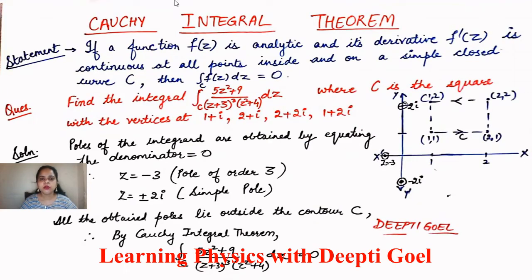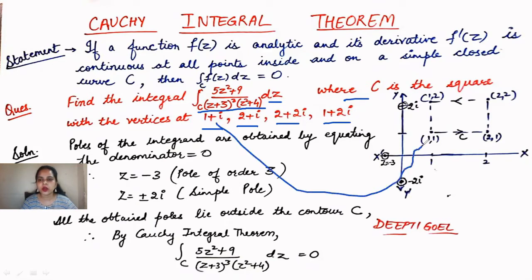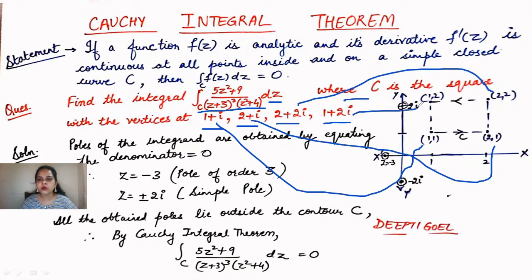Next problem: find the integral over C of (5z² + 9) / [(z + 3)³(z² + 4)] dz, where C is a square with vertices at 1 + i, 2 + i, 2 + 2i, and 1 + 2i. Plotting these: coordinates (1,1), (2,1), (2,2), and (1,2). Joining these vertices gives us the contour as a square in the complex plane.